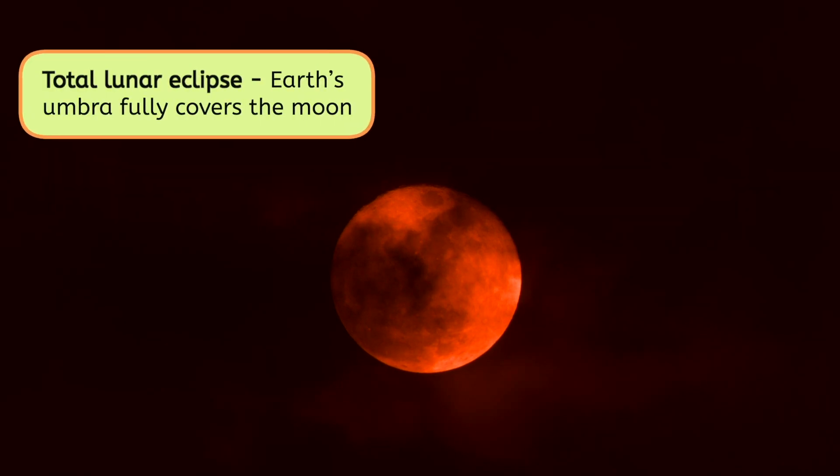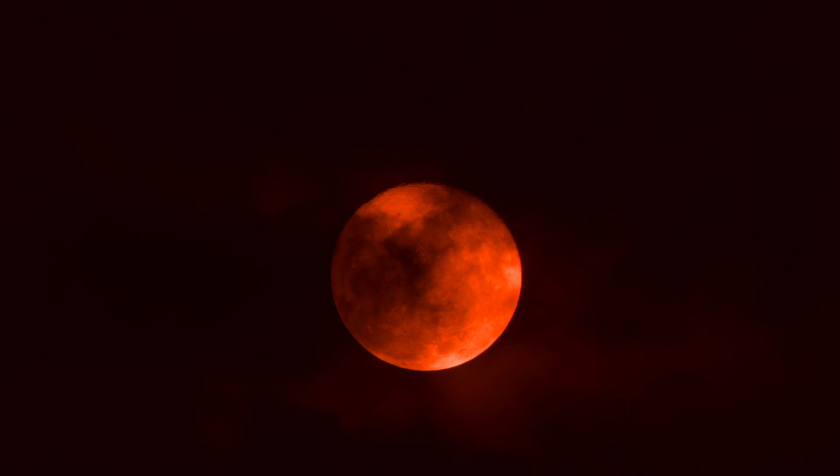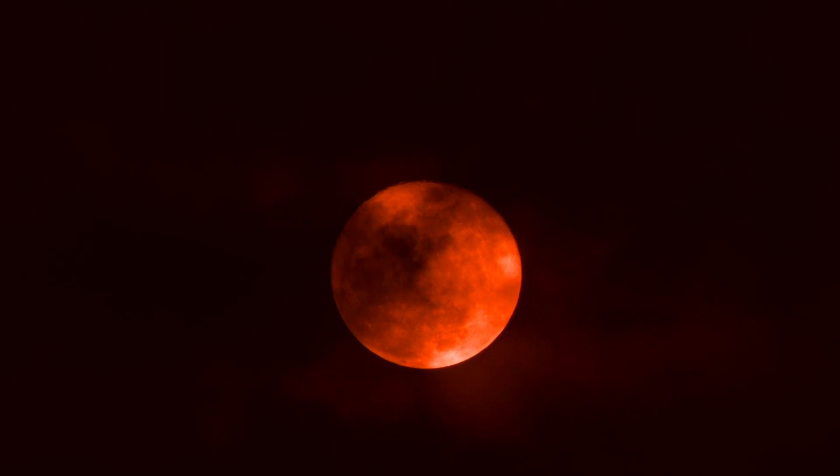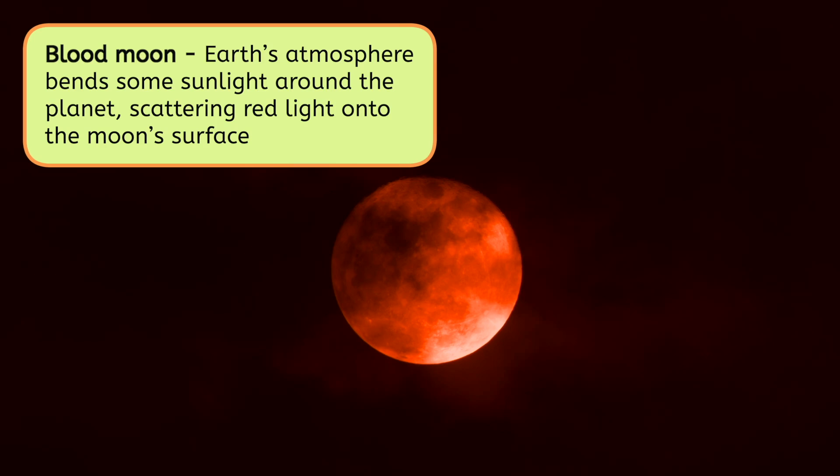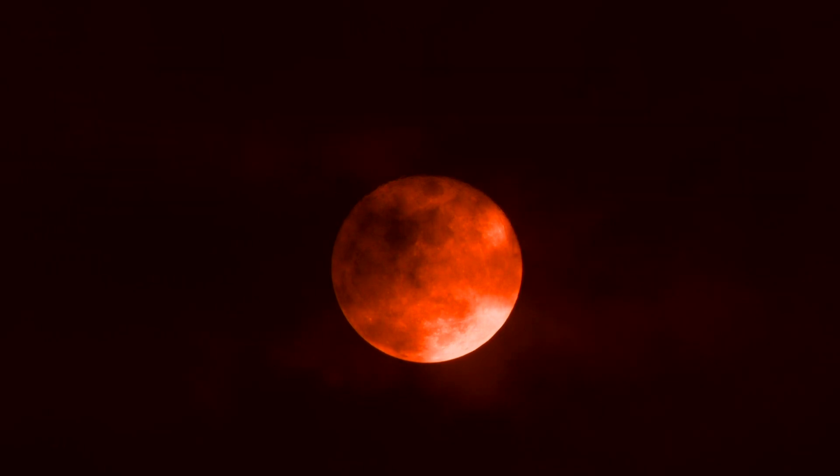During a total lunar eclipse, the Umbra fully covers the Moon. This makes the Moon appear to turn a reddish color, which is known as a Blood Moon. This is because Earth's atmosphere bends some sunlight around the planet, scattering red light onto the Moon's surface. The entire event can last several hours, but the total phase, when the Moon is fully in the Umbra, typically lasts only a few minutes to an hour.